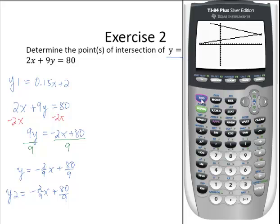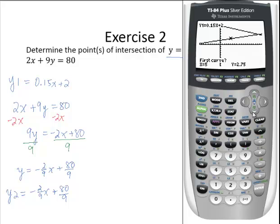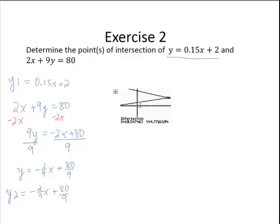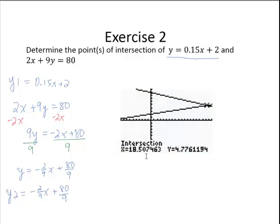So now going into the calc menu by pressing second and the trace key, fifth option for the intersect. Let me move to the right to get close to the point of intersection. And I press enter three times. And it yields the point of intersection. So the intersection is at 18, 5.074776. And you may need to approximate those depending on your needs.